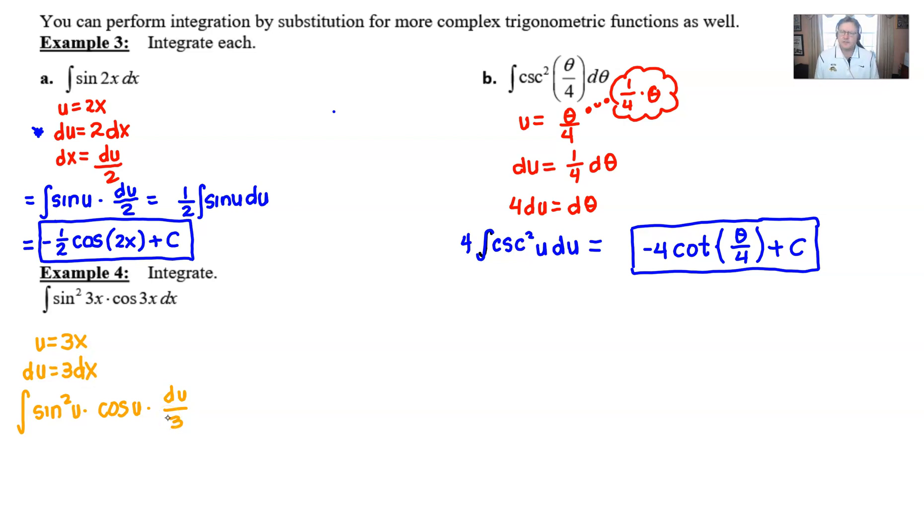sine squared of u sticks around, times the cosine of u, and then this dx I guess is just a du over 3. And we've got a big problem on our hands. We're not going to be able to integrate sine squared times cosine, not without doing another u substitution. And we probably should have just done the correct one to begin with. We just don't have an integration formula that handles this sine squared times cosine.